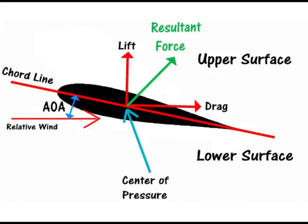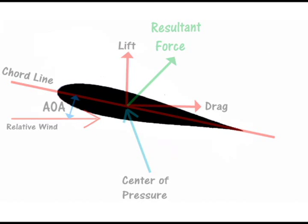Lift acts on the airfoil perpendicular to the relative wing flow, while drag acts parallel to it as a resistive force, opposing the motion of the airfoil.